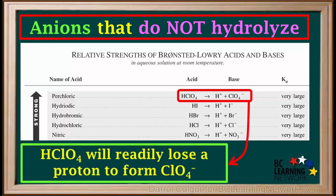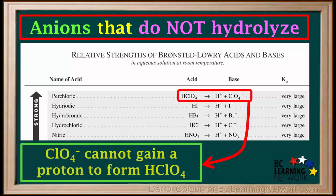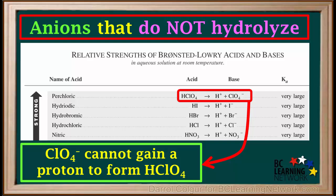For example, HClO4 will readily lose a proton to form ClO4-. But ClO4- cannot gain a proton to form HClO4. A reaction with a single arrow on this table will not go in the opposite direction of the arrow.